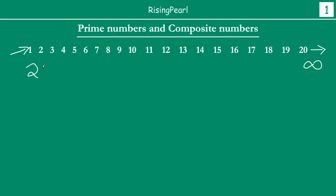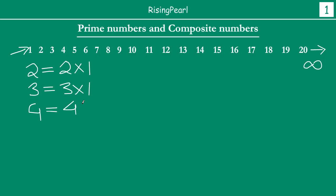Let's start with 2. I can write 2 as 2 times 1. Similarly I can write 3 as 3 times 1, and 4 as 4 times 1. But I can also write 4 as 2 times 2. So notice that the number 2 can only be expressed as 2 itself multiplied by 1 — there is no other way to write 2 as a product of two numbers. The same is true for 3.